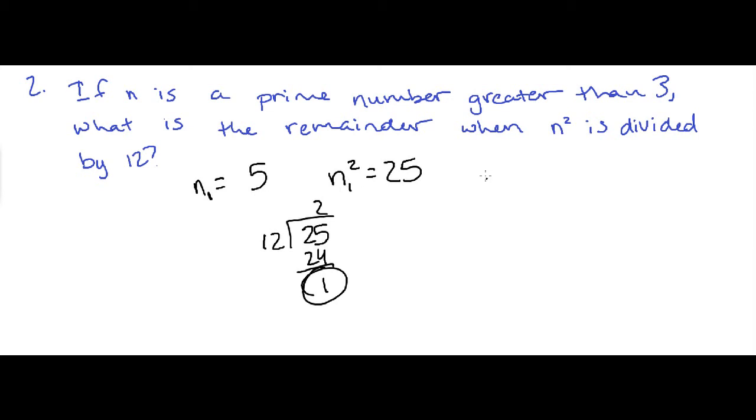That's most likely going to be our answer, but let's go ahead and check the next greatest prime number. We'll label this as n sub 1. Our second number we're going to choose, n sub 2 equals 7. So n sub 2 squared equals 49. 12 goes into 49 4 times. 12 times 4 is 48. Subtract, we get a remainder of 1. I think that is enough to confidently say that the correct answer is 1.